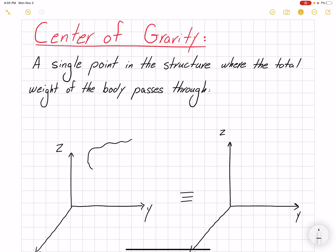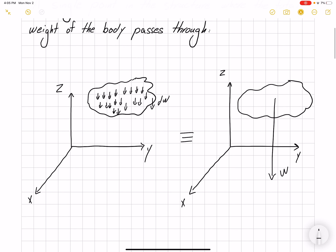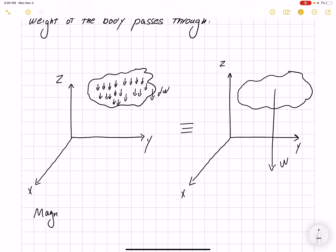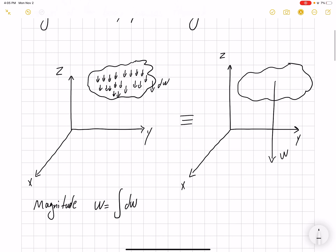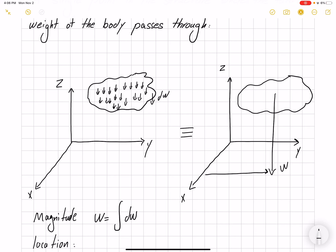Let's say we have a geometry and we want to find the center of gravity. In reality, the weight is being applied as a distributed loading, but dealing with distributed loading is challenging. So we would like to replace all this distributed loading with one single load. Finding the magnitude of this weight is simply the summation of all distributed loading. But in addition to the magnitude, the location is also important. We need to know where this W is acting, and we show this location by the center of gravity — x̄ and ȳ.